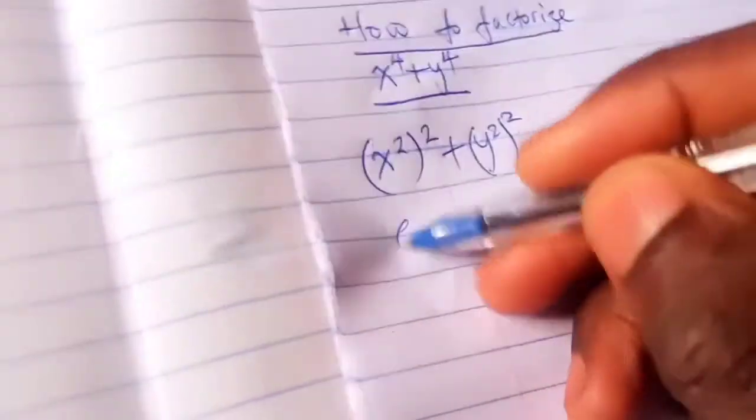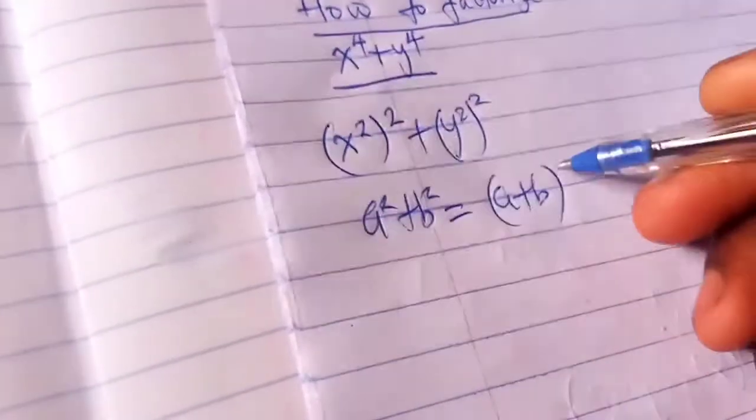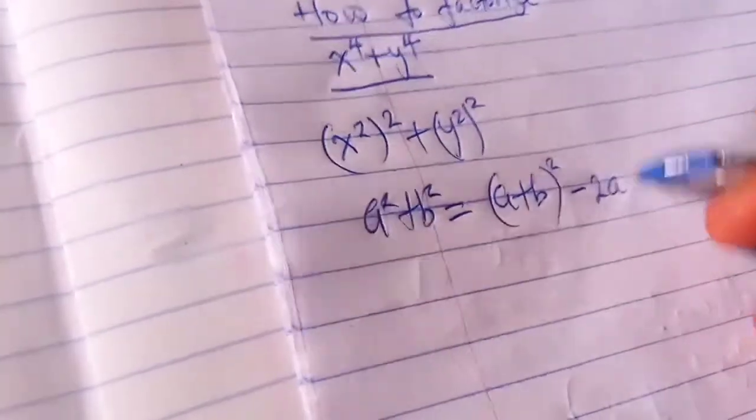Now you know that when we have a squared plus b squared, it is the same thing as a plus b squared minus 2ab.